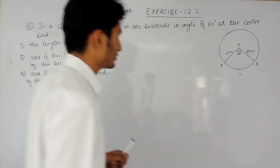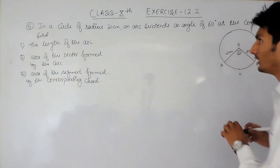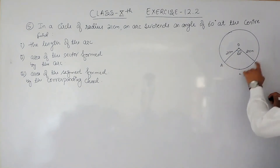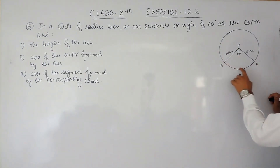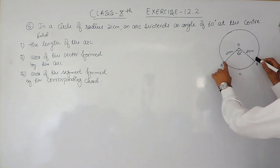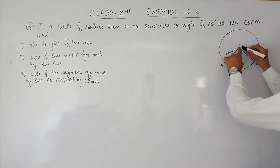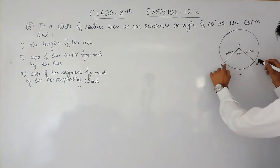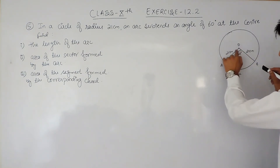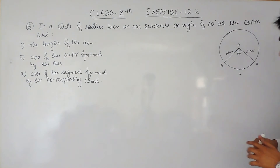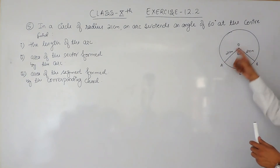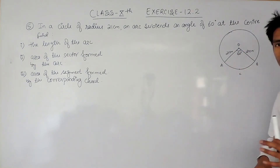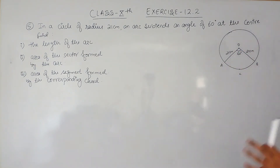First of all, we are given an arc — let's say the arc is ACB. This arc subtends an angle of 60 degrees at the center, meaning if we join the radii at the center it will form an angle of 60 degrees. The radius is given to us as 21 centimeters.